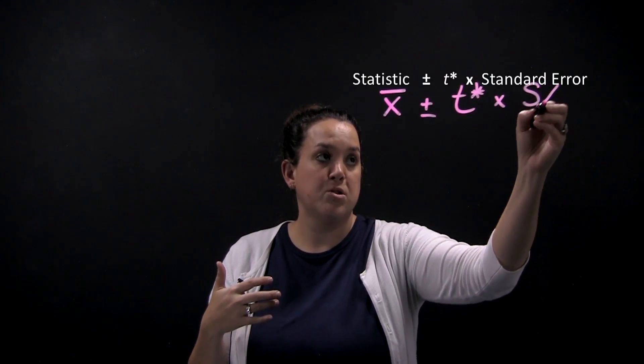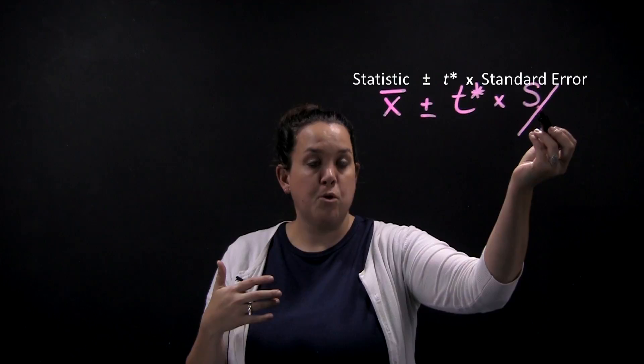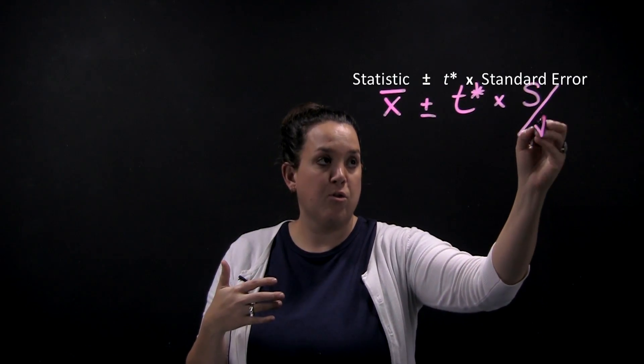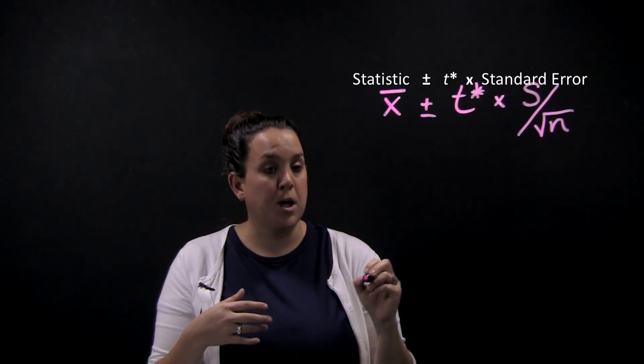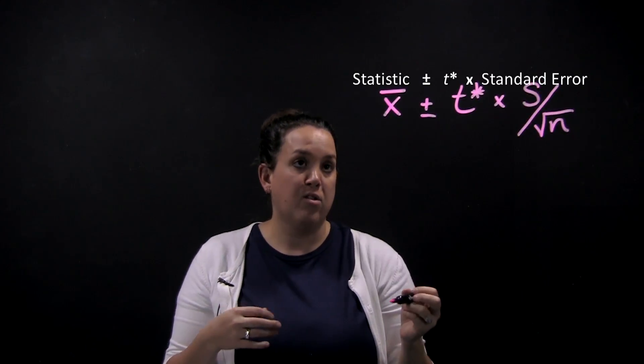So this is where we're making that substitution for sigma. So if you remember, we had sigma over the square root of n. Now we will substitute S because we don't know sigma anymore and divide that by the square root of n.